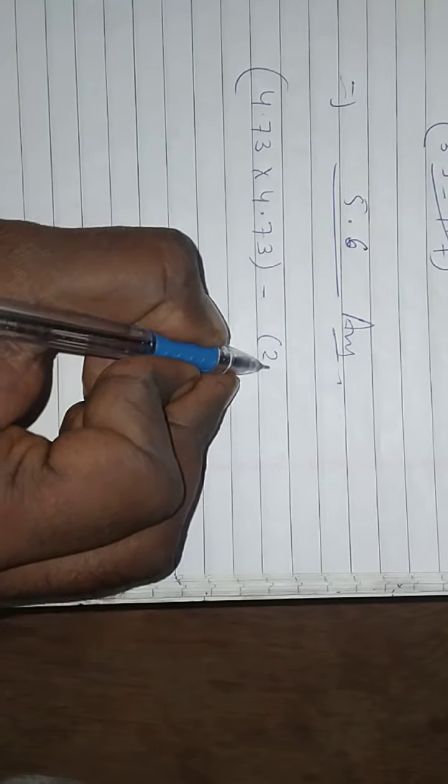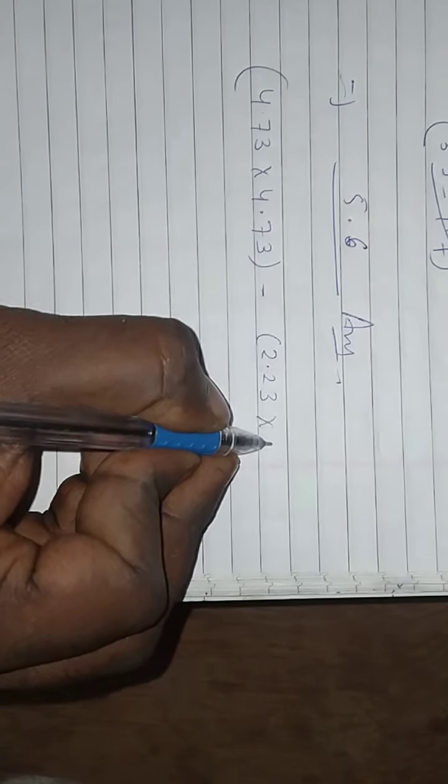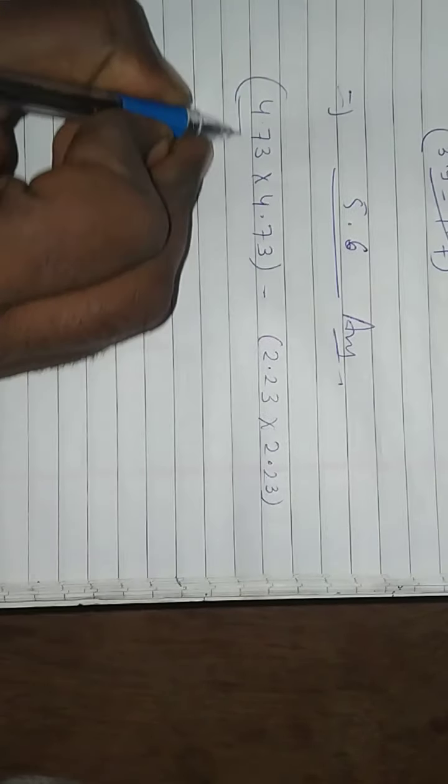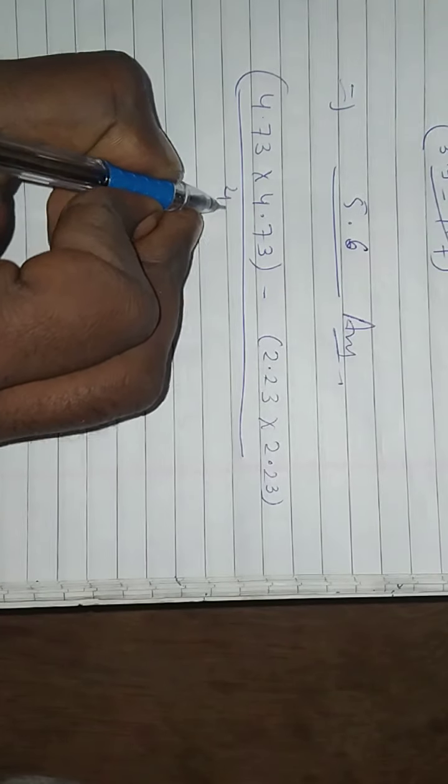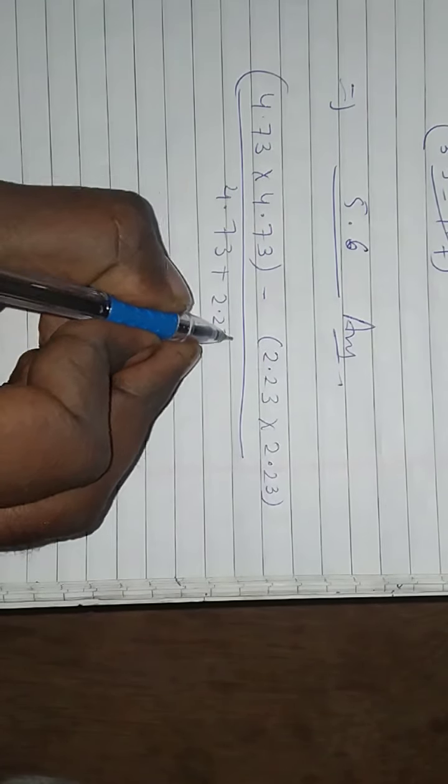Good morning students. Today we discuss XI 6.4, question number 4. Question number 4: without actual multiplication, find the value of the 5th part: 4.73 × 4.73 minus 2.23 × 2.23, upon 4.73 plus 2.23.